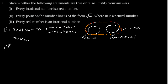Part 2. Every point on the number line is of the form square root of M where M is a natural number.